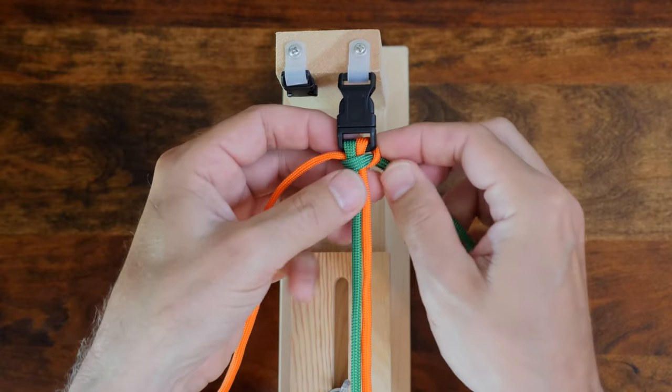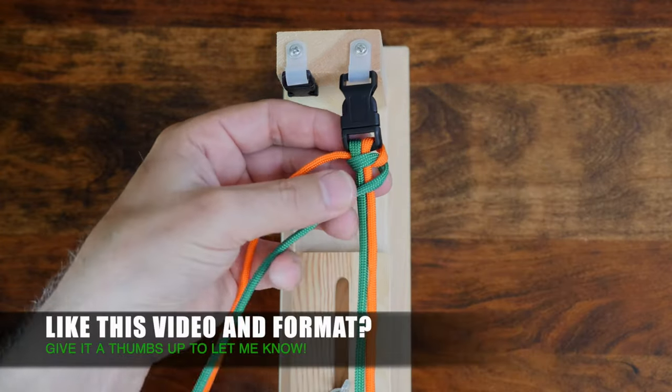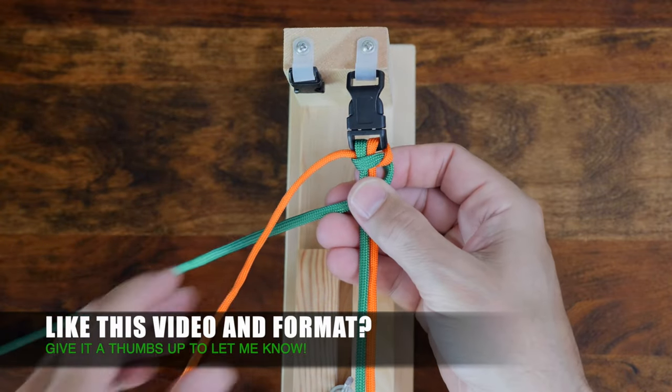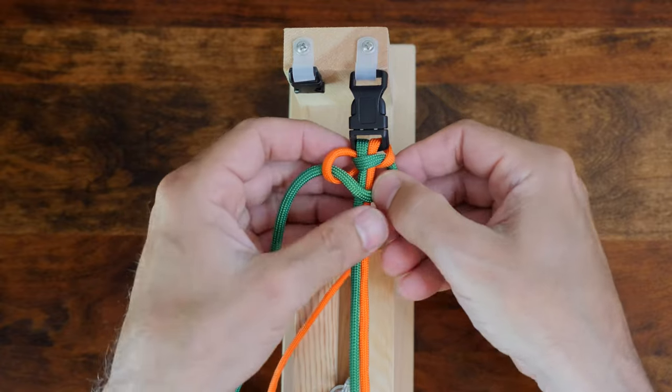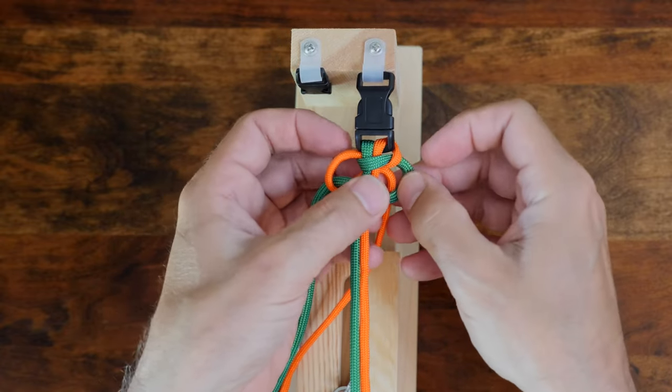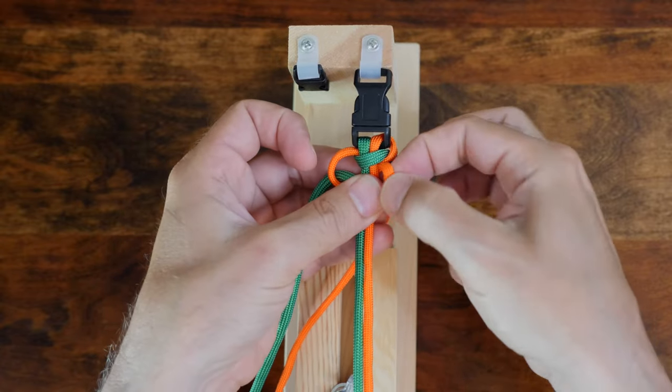From there, I'm going to repeat the weave pattern, this time starting with the right cord, passing over both center core strands, then passing the left over the green, followed by passing it under both center strands, and up through the loop on the right side as shown.